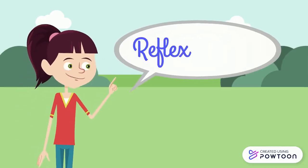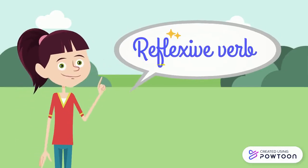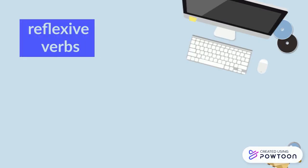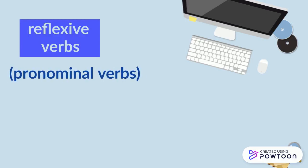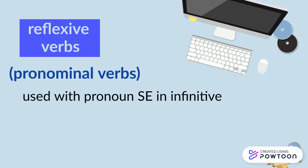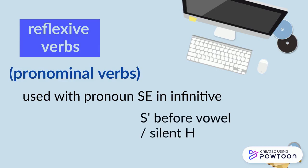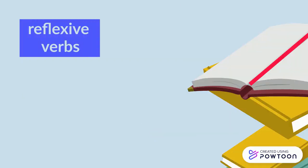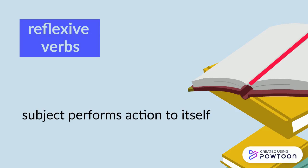In this video, we are going to talk about reflexive verbs. Reflexive verbs, also called pronominal verbs, are used with the pronoun SE at the infinitive, or S' before a vowel or a silent H. We talk about reflexive verbs when the subject performs the action to itself — in other words, the subject and the object are the same.